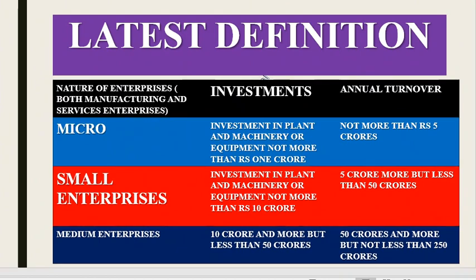The definition of medium enterprises was further changed from 1st June 2020. In the latest definition, for micro enterprises, investment in plant and machinery and equipment should not be more than 1 crore and annual turnover not more than 5 crore. For small enterprises, investment should not be more than 10 crore and annual turnover not more than 50 crore. For medium enterprises, investment in plant and machinery and equipment should be more than 10 crore but not more than 50 crore, and the annual turnover should be 50 crore or more but not more than 250 crore — revised upward from the earlier limit of 100 crore.